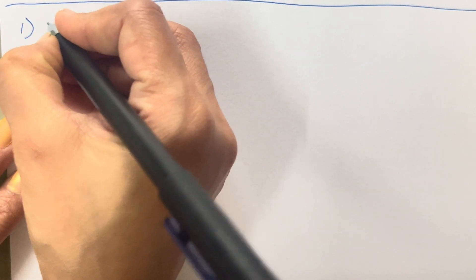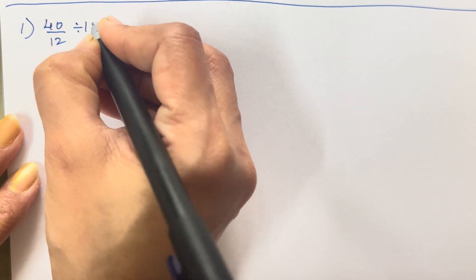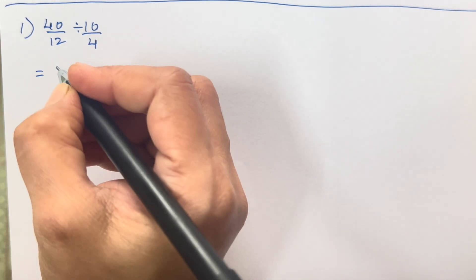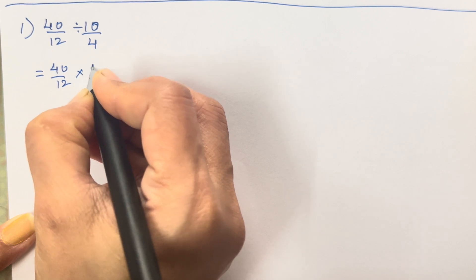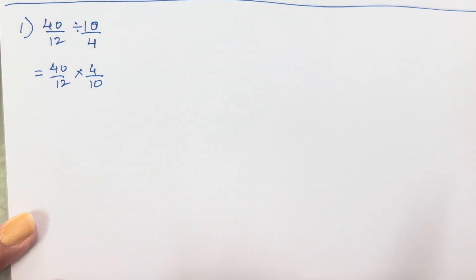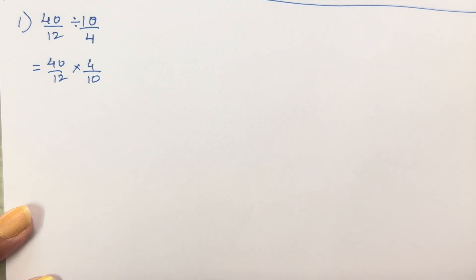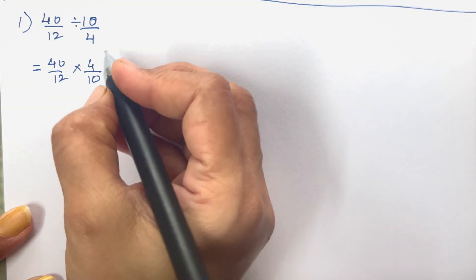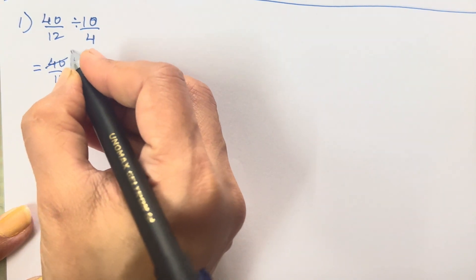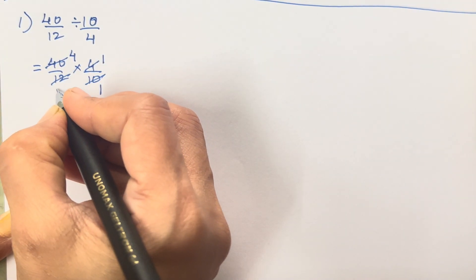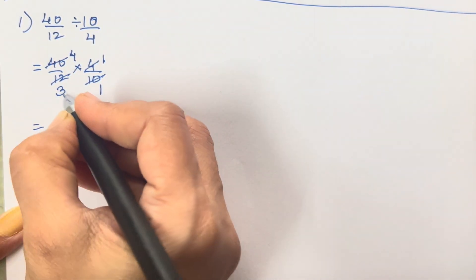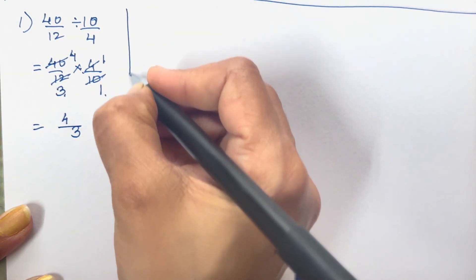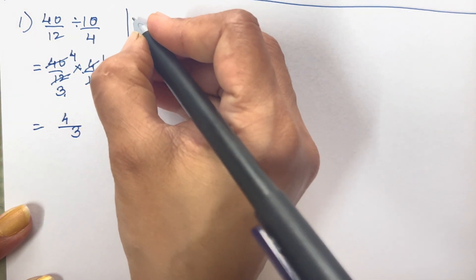Now we will move on to division of rational numbers. For 40/12 divided by 10/4, we first reciprocate: division changes to multiplication, so it becomes 40/12 × 4/10. Here is a shortcut: 4 threes are 12 and 10 ones are 10 and 4 ones are 4, simplifying to 4/3.